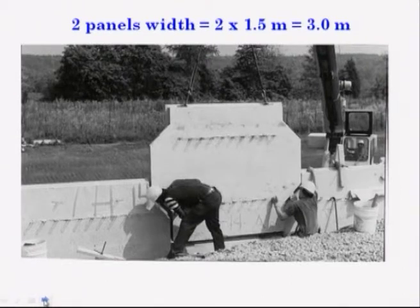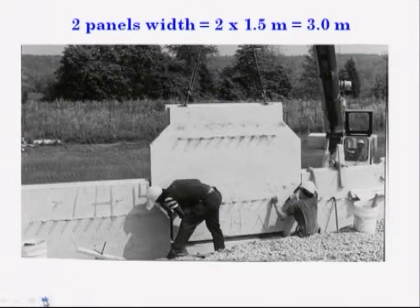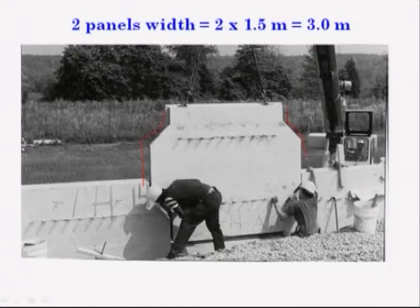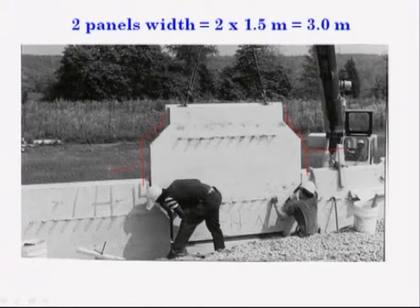For two panel widths: if you look at the panel shape, one will be connected here and one will be connected here. If it is a two panel width, then 2 × 1.5, generally 3 meters of spacing, can be kept.